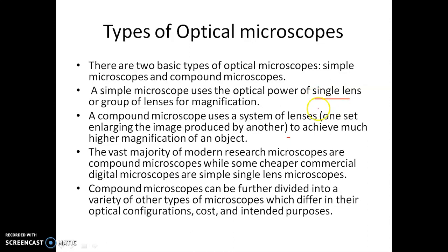A compound microscope uses a system of lenses, with one set of lenses enlarging the image produced by another set of lenses — for example, the objective and eyepiece combination.